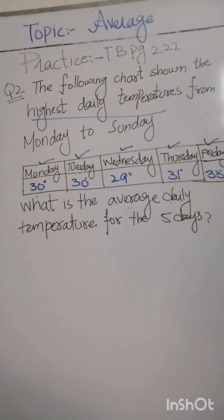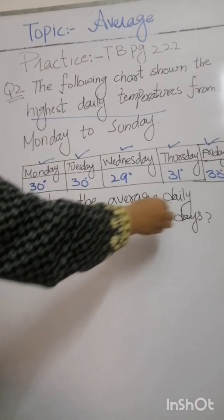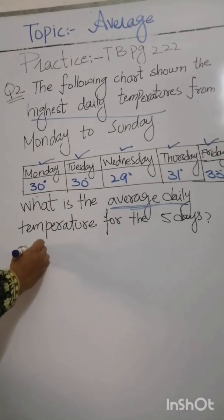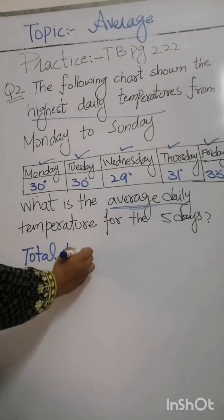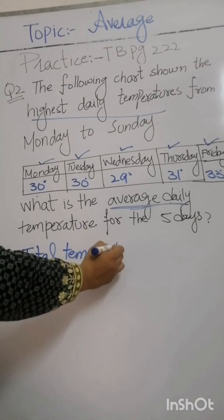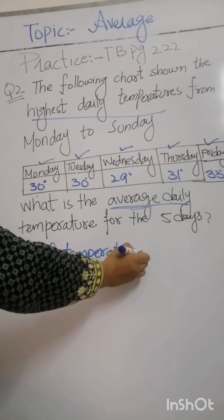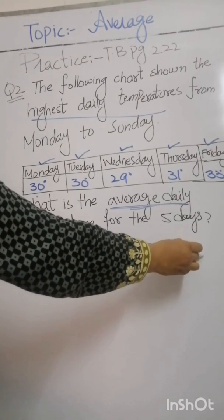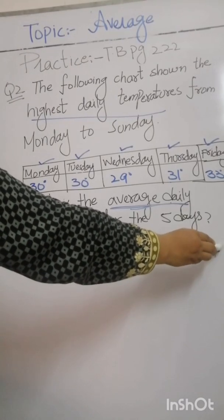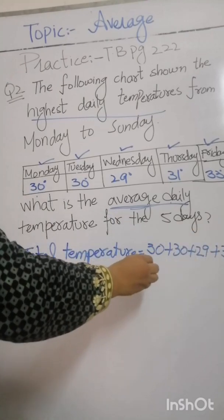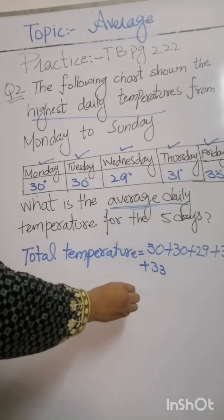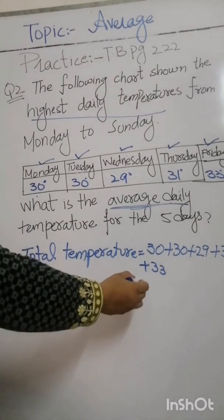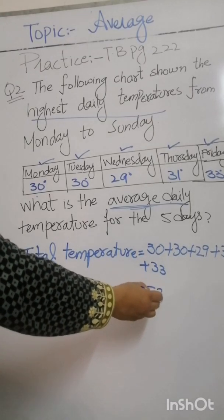We are given 5 days of temperature and we have to find the average daily temperature. First of all, we find the total temperature for 5 days: 30 plus 30 plus 29 plus 31 plus 33. The answer we get is 153.